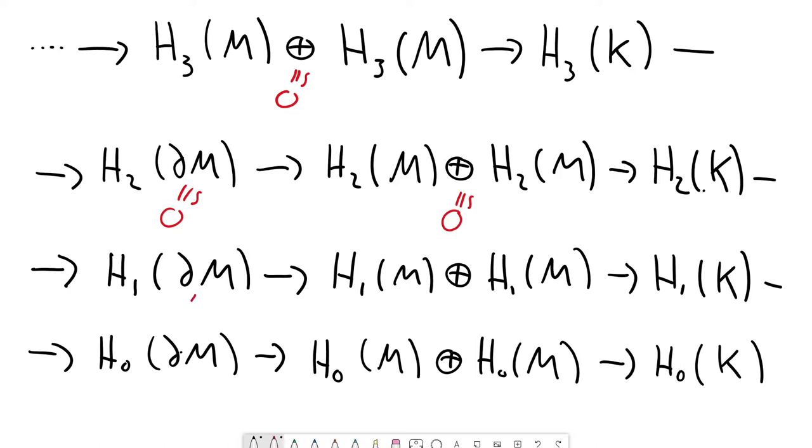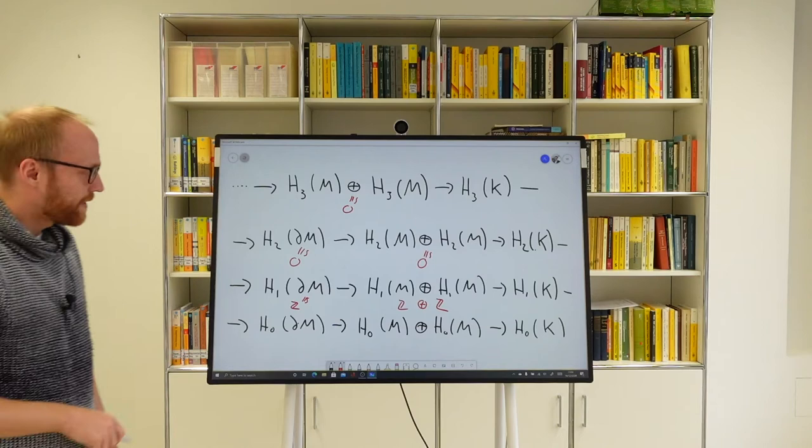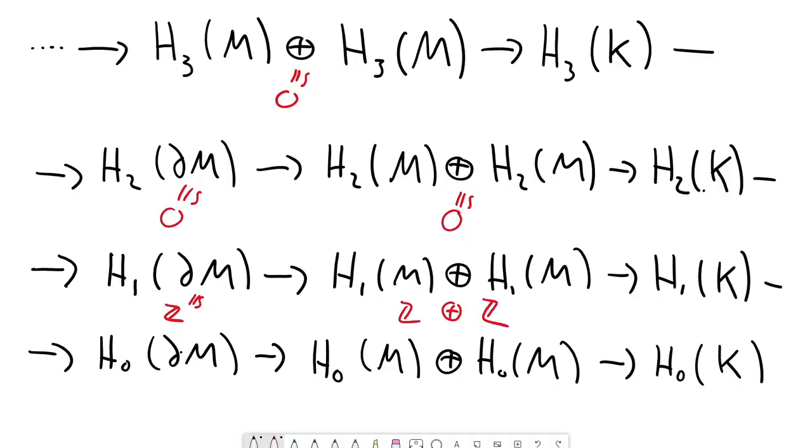For the first time something happens: H₁ of the circle is Z. So this is Z⊕Z. Here's the group we're interested in. Since H still denotes singular homology, we know what happens in degree zero - we count the path components. All those spaces are path connected, so this will be Z, this will be Z⊕Z, and the zero homology group of the Klein bottle is also just Z.